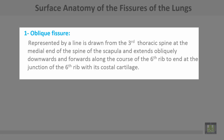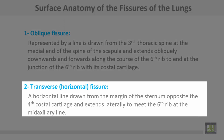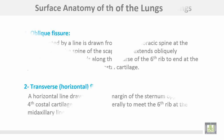The oblique fissure is represented by a line drawn from the third thoracic spine at the medial end of the spine of the scapula, extending obliquely downwards and forwards along the course of the sixth rib to end at the junction of the sixth rib with its costal cartilage. The transverse or horizontal fissure is a horizontal line drawn from the margin of the sternum opposite the fourth costal cartilage, extending laterally to meet the sixth rib at the mid-axillary line.